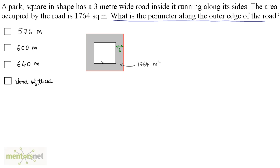Let us assume that the side of the inner square is S. So the side of the outer square will be S plus 6, since we have 3 meters on both sides. Now, the area of the outer square minus the area of the inner square will give you the area of the shaded region.